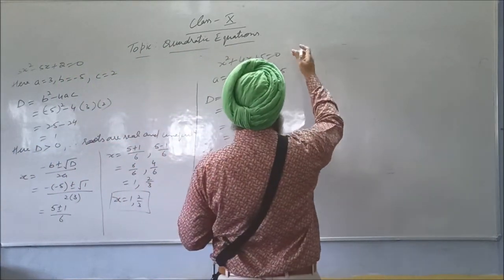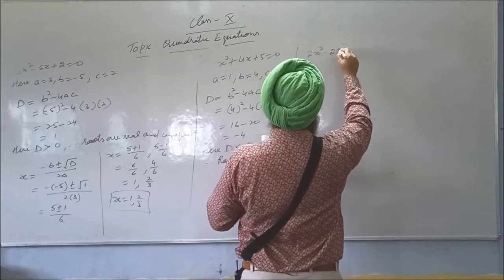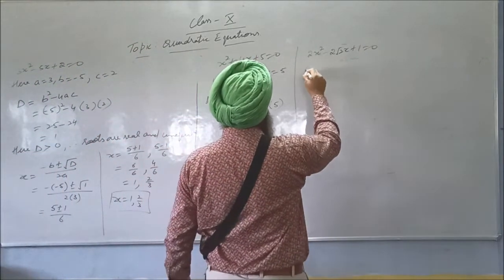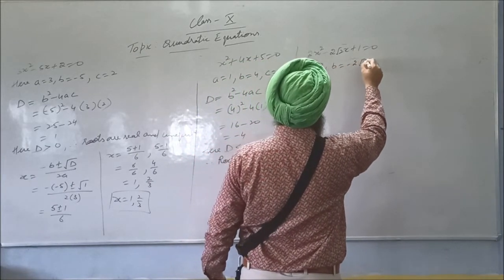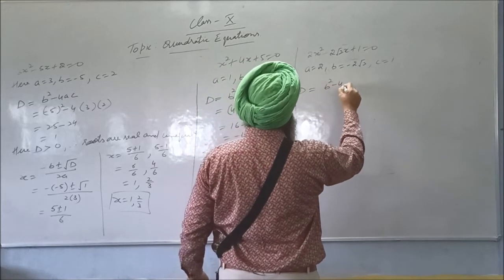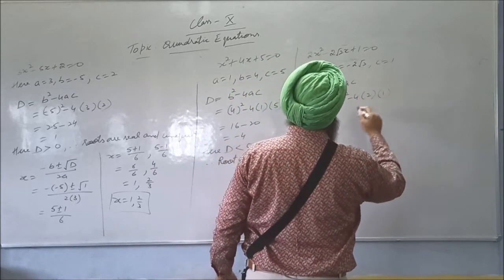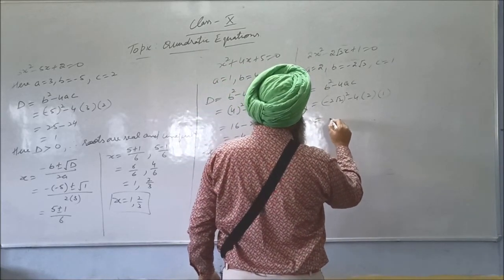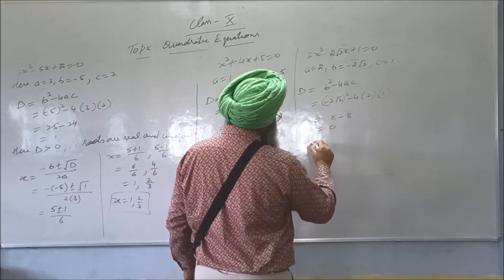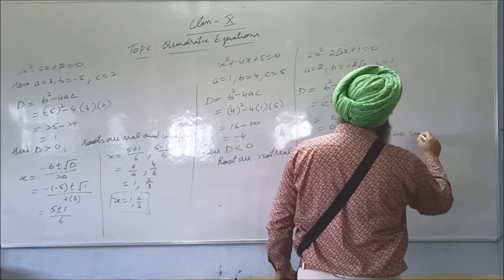I am taking one more example. Here a is 2, b is minus 2, and c is 1. First we calculate the discriminant. This becomes a minus a — it is 0. Here D is equal to 0, so roots are real and equal.